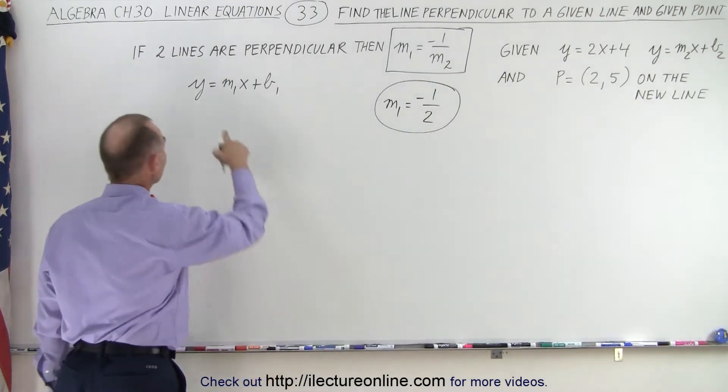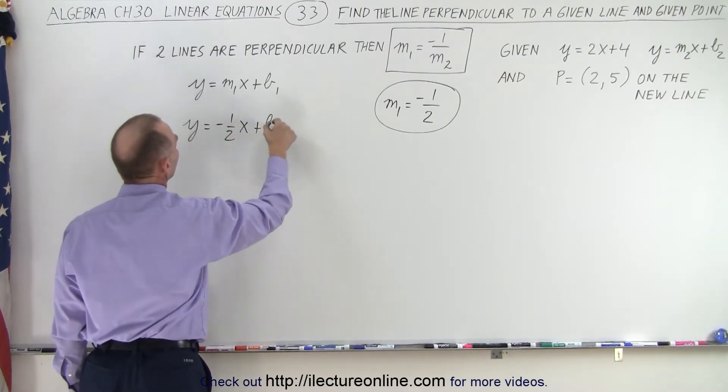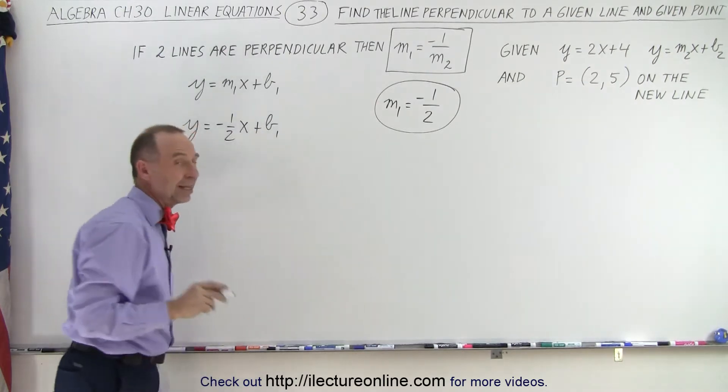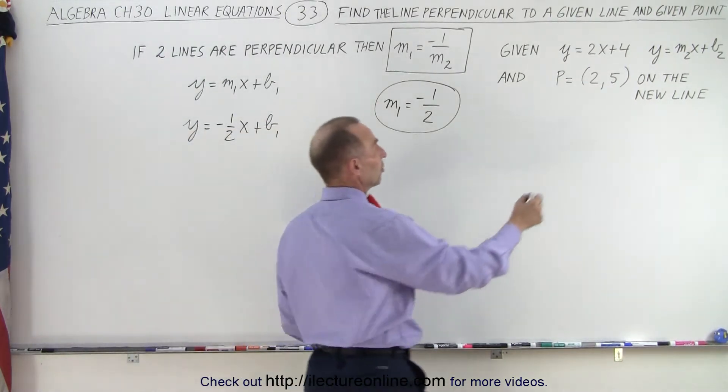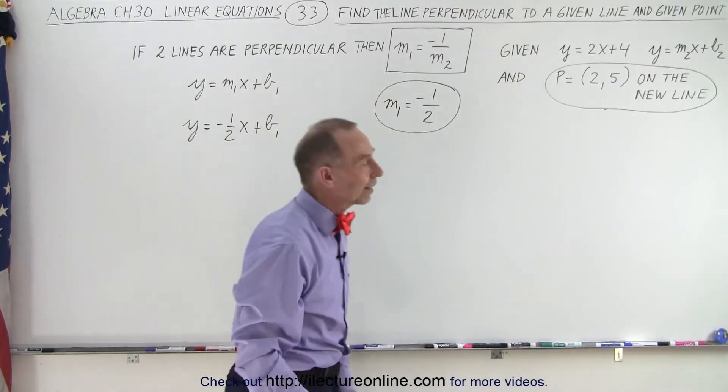So now we plug that into this equation, so we have y equals negative 1 half x plus b1. Now it's up to finding b1 by using this additional piece of information. We know that that point is on that line.